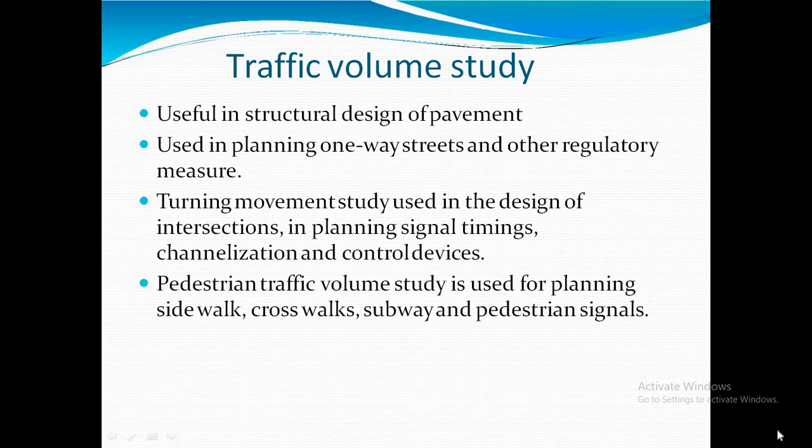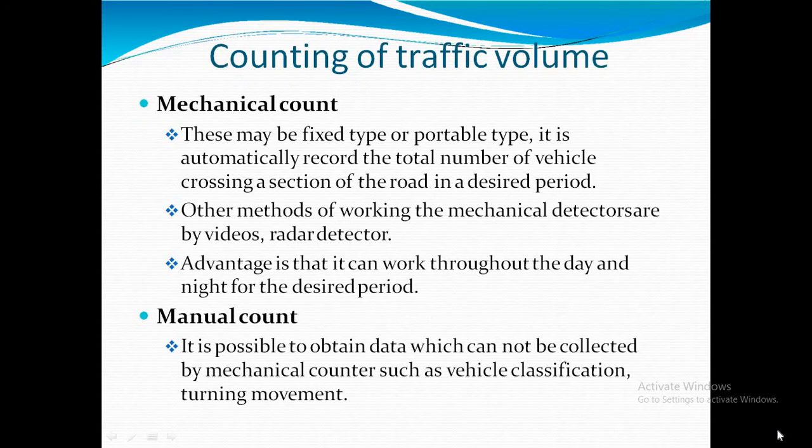We need to maintain separate records so that counting can be done easily. Generally, manual counting and mechanical counting are the two methods used. According to the method, we need to calculate traffic volume. If separate vehicle tracks are maintained, it is easy to calculate the volume stream. We have two types of traffic volume counting: mechanical counting and manual counting.